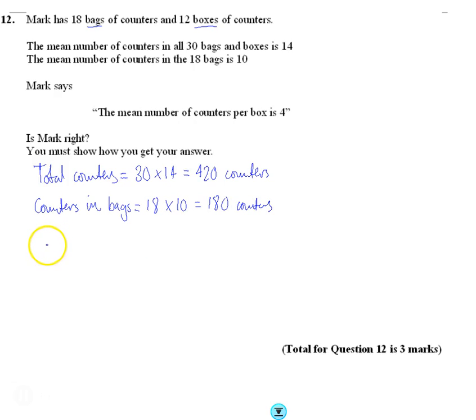So the counters in boxes is just going to be the difference between those. So it's 420 minus 180, which gives us 240. So there's 240 counters and they're all in the boxes.